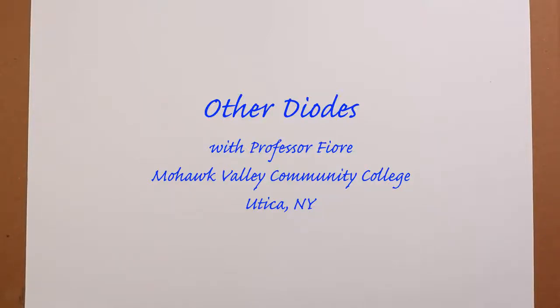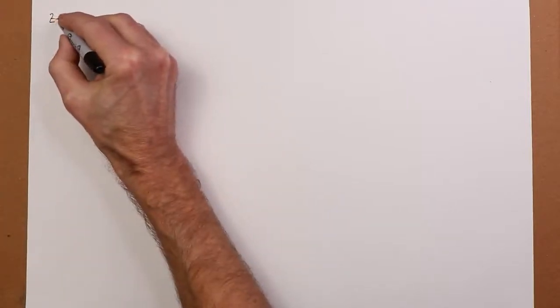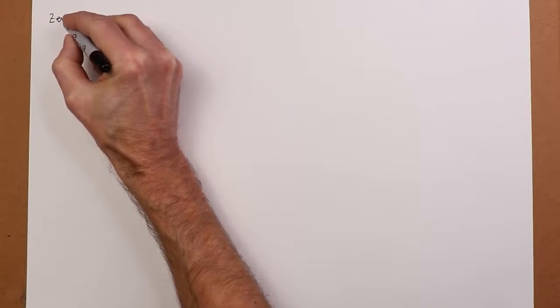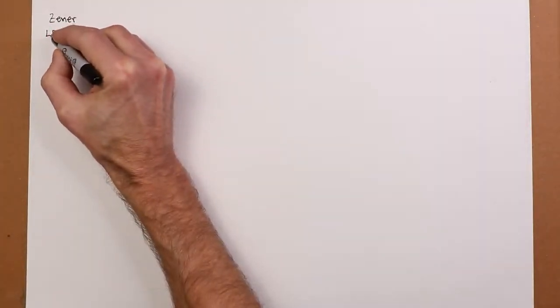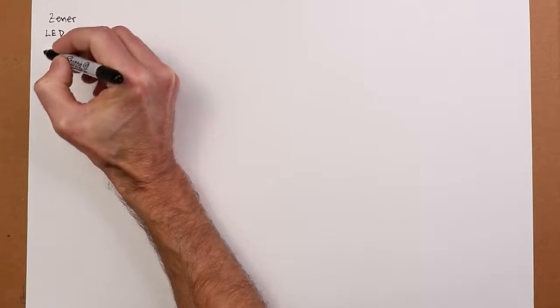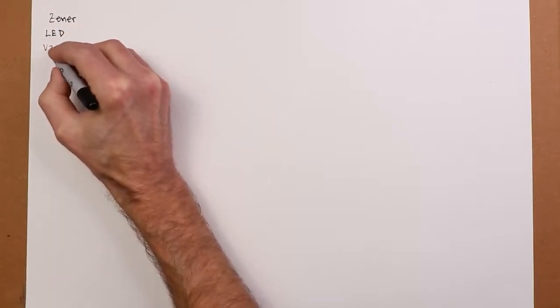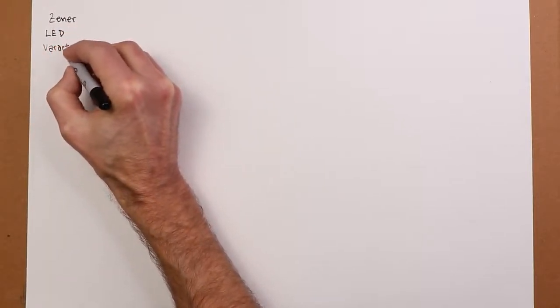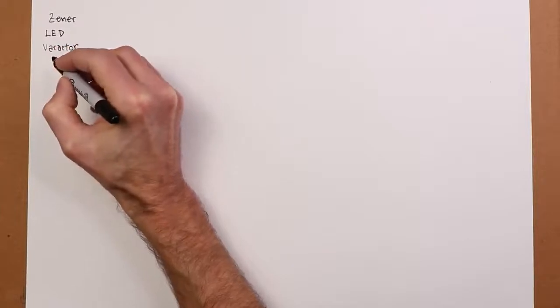Hello folks. Today we're going to talk about different kinds of diodes. We've already talked about rectifying diodes and signal diodes, our basic diodes, but there are other kinds of diodes. We're going to look at zener diodes, LEDs, photodiodes, varactors, and the Schottky diode.